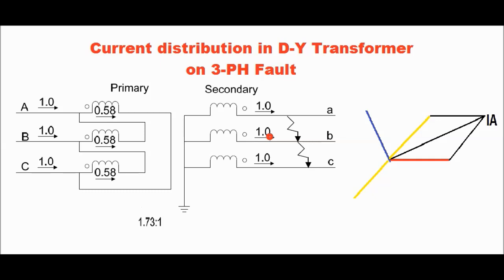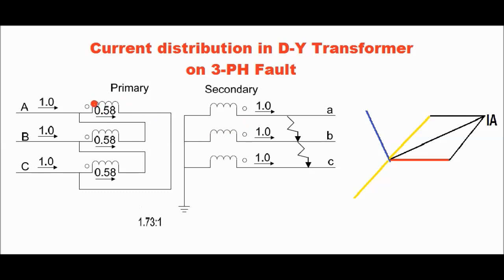Let us first discuss current distribution for a delta-star transformer on a three-phase fault in the star side winding. In this figure you can see a three-phase fault occurs, and for ease of calculation let us consider the fault current is 1 ampere for each phase — so 1 ampere flows in the red, yellow and blue phase each. Since the turns ratio is 1.73 to 1, and V1/V2 = 1.73, the current in the HV side red phase winding will be 1 divided by root 3 (1/1.73), which comes to 0.58 ampere. So 0.58 ampere flows in each phase of the primary delta side winding.